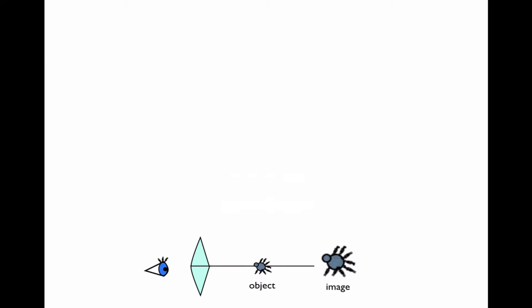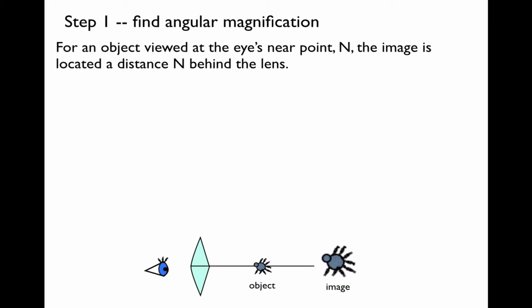Step 1 will be to find the angular magnification. For an object viewed at the eye's near point, N, this means that the image which the eye is focusing on is located a distance N behind the lens, assuming that the eye and the lens are close together.